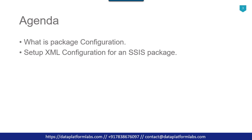Today we will discuss what is package configuration and then how to set up XML configuration for an SSIS package. You can think of package configuration as a kind of property and value pair that you can add to your completed SSIS package. At runtime, the SSIS package will actually read the values from the configuration file instead of reading it from the SSIS package itself. For example, when you are developing your SSIS package on the development server, maybe you can use the connection string of your development SQL Server.